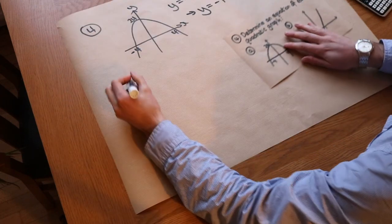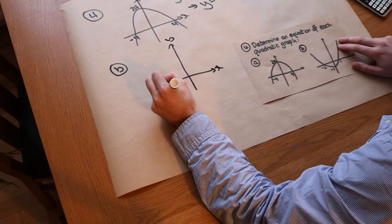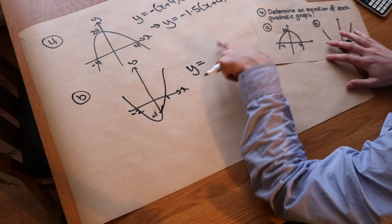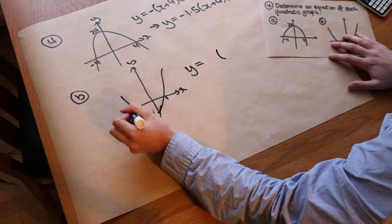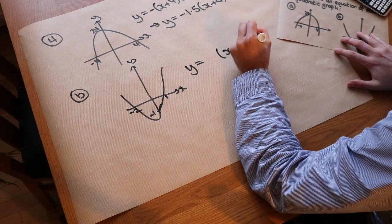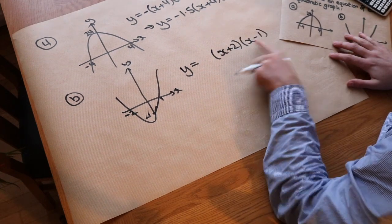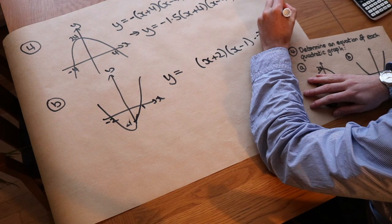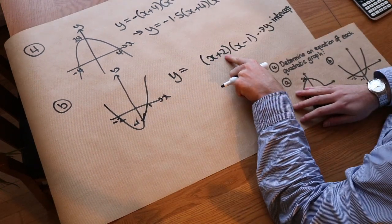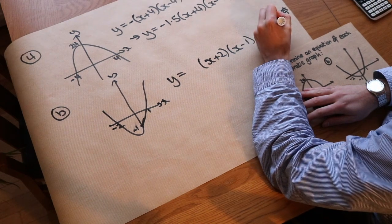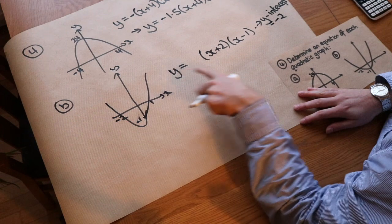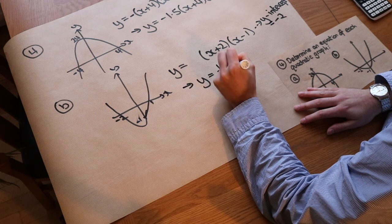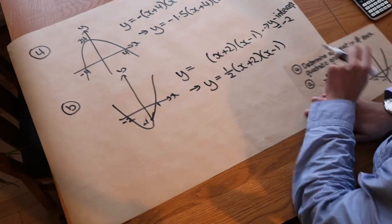For graph 2 with roots minus 2 and 1 and y intercept minus 1: this is a positive quadratic so we start with y equals (x plus 2)(x minus 1) to get the correct roots. Substituting x equals 0 gives a y intercept of minus 2, but we only want minus 1. Since that's half of minus 2, we scale by one half: y equals one half times (x plus 2)(x minus 1), which fixes the y intercept.